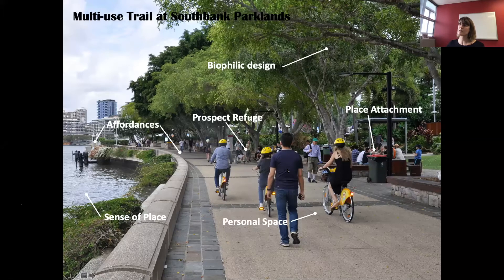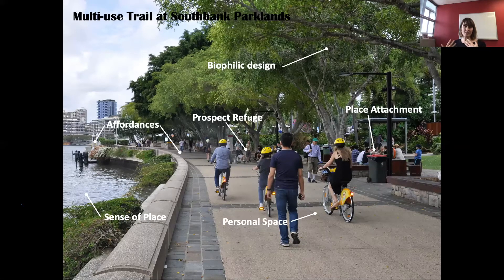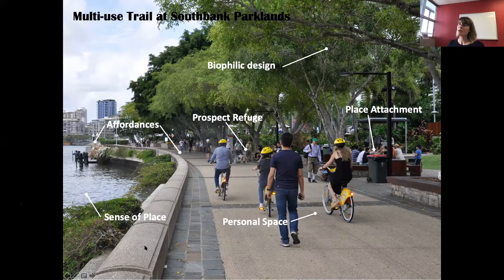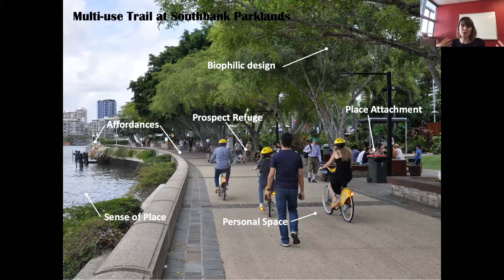By contrast, the wall seating without canopy cover lacks refuge even if it has prospect — your back is to the water, boats are behind you, so you don't feel protected. Personal space: the pathway is wide enough for people to pass and for both walkers and cyclists. Place attachment: family picnics and gatherings create opportunities to develop attachments to the place.